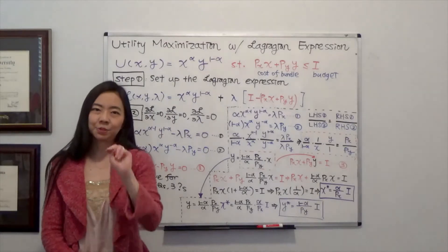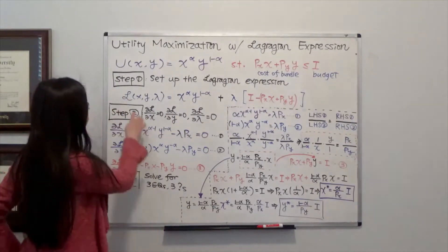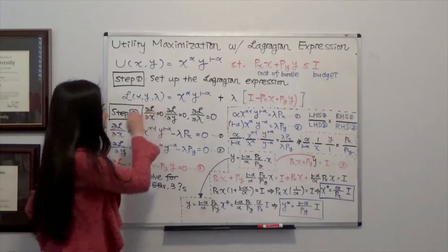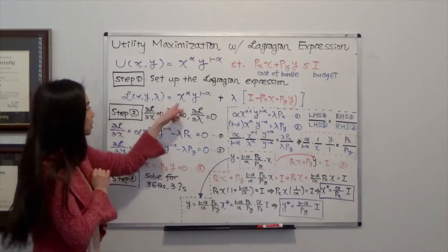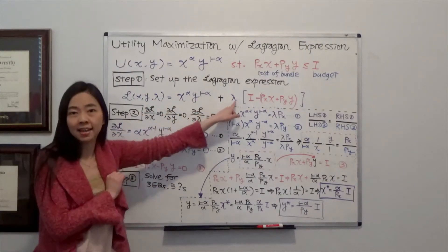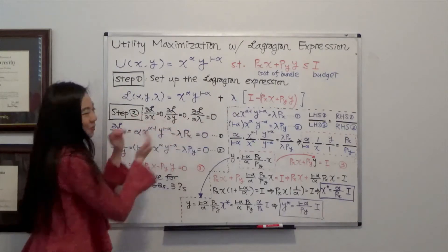In step 2, we take the Lagrangian expression and compute the partial derivative with respect to x, y, and lambda, setting each equal to zero.